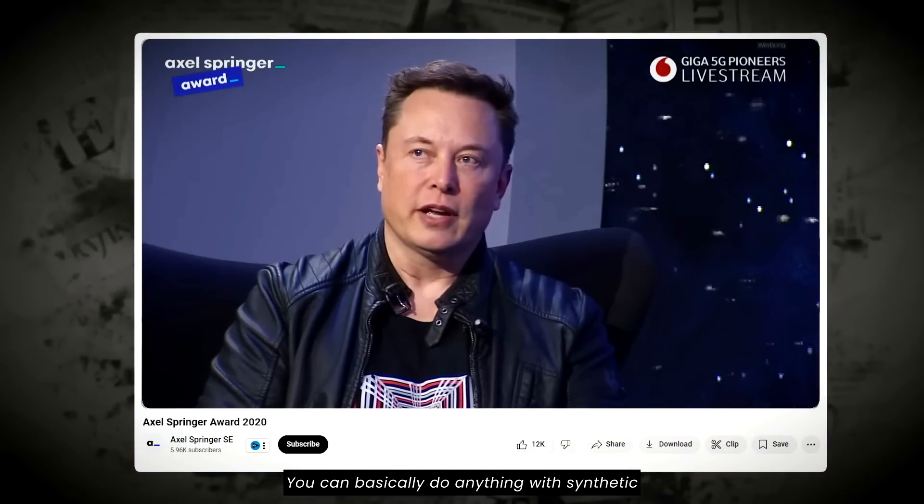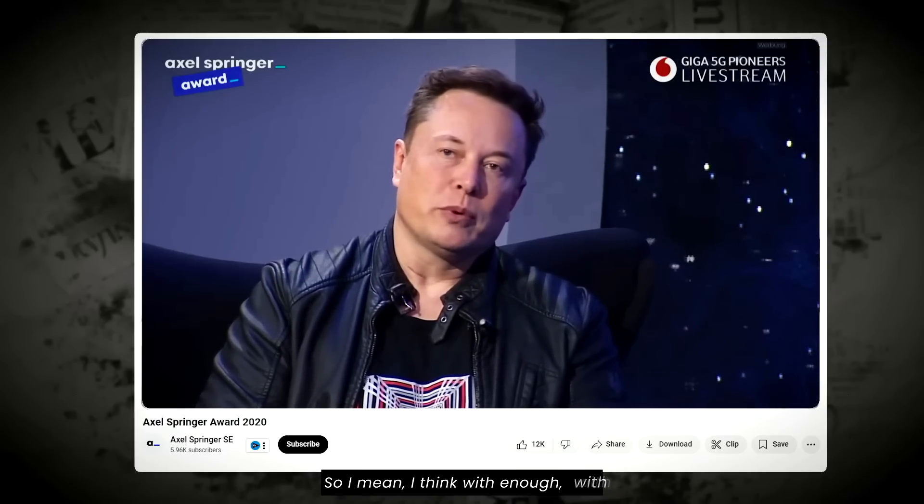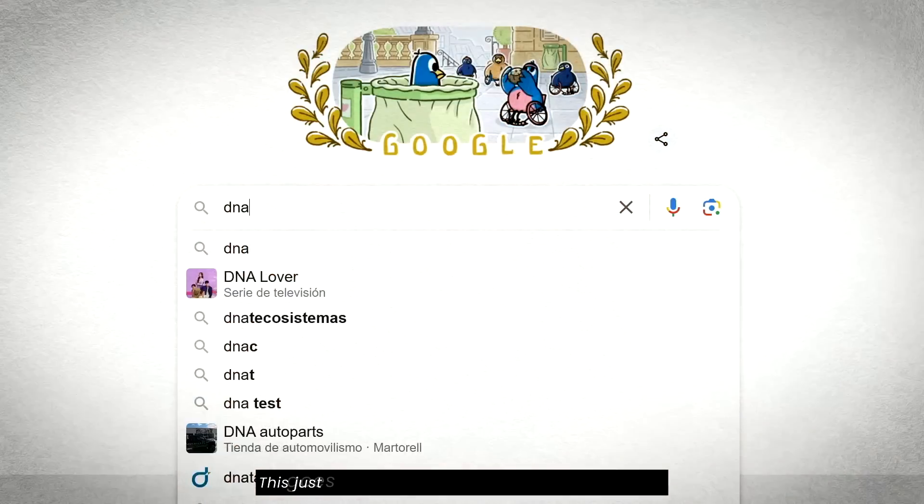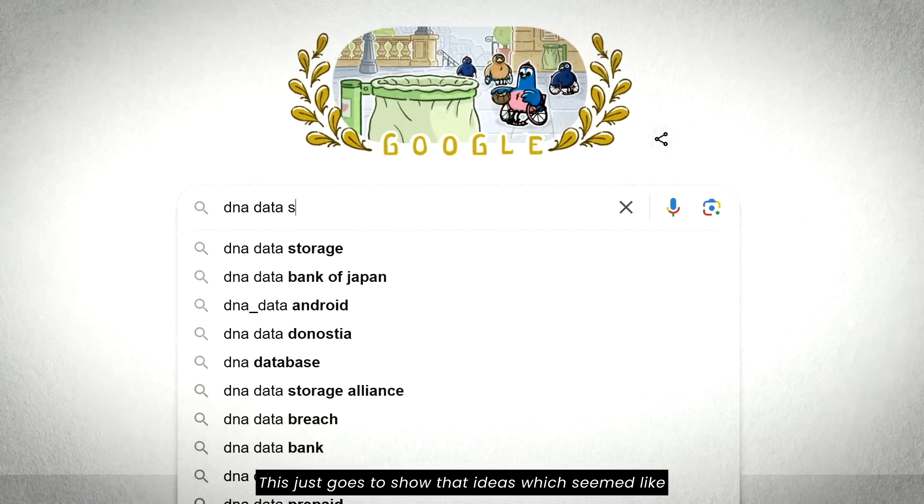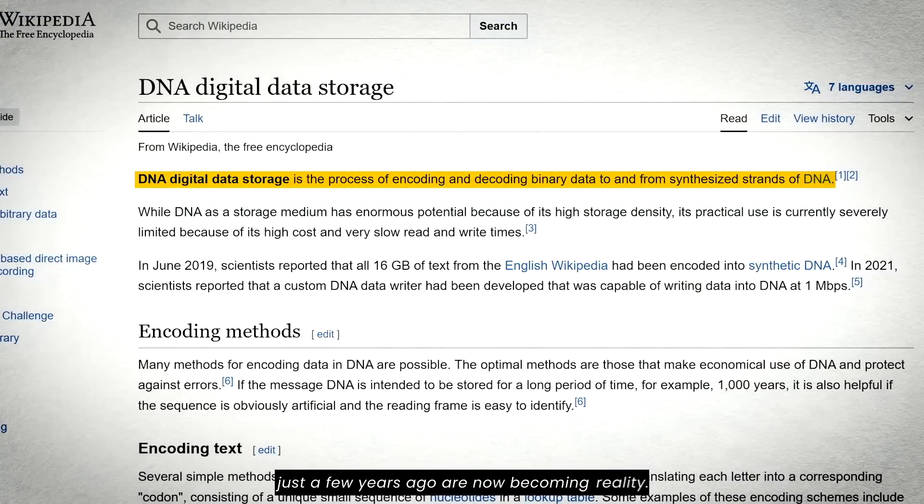You can basically do anything with synthetic RNA, DNA. It's like a computer program. I mean, I think with enough effort that's not too crazy, you could probably stop aging, reverse it if you want. These are, you can basically do anything. You can turn someone into a freaking butterfly if you want with the right DNA sequence. This just goes to show that ideas which seemed like pure sci-fi or something out of an esoteric tale just a few years ago are now becoming reality.